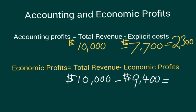That would mean that the economic profits for this firm equal $600. So in this case, we have both the accounting profits and the economic profits as positive numbers. Sometimes we have examples where the accounting profits are positive but the economic profits are negative. What that means is that the next best alternative this business owner could have pursued —